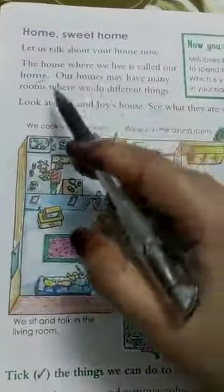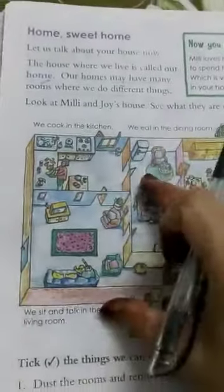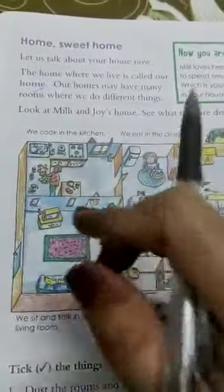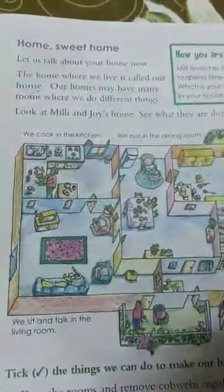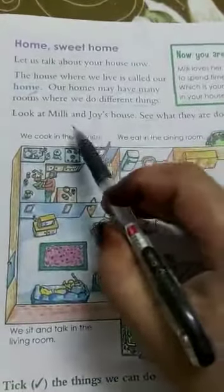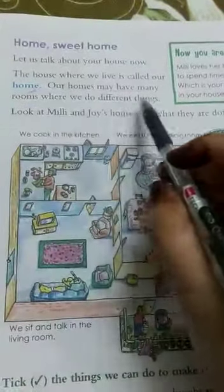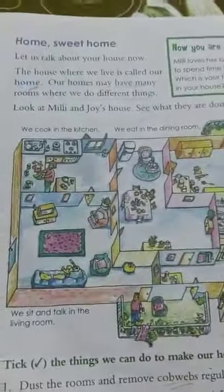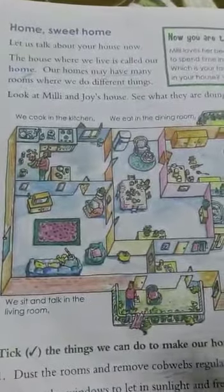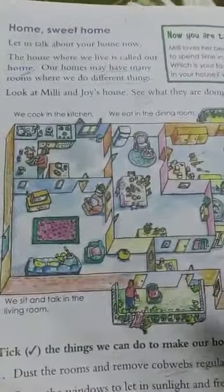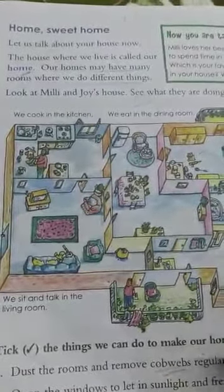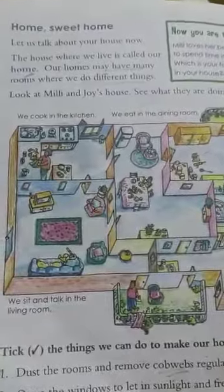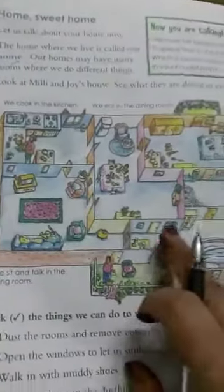Next — home sweet home. What is a home, children? The house where we live is called our home. Our homes may have many rooms where we do different things. In our homes there will be different rooms, and in the different rooms we do different things. Look at the picture here.